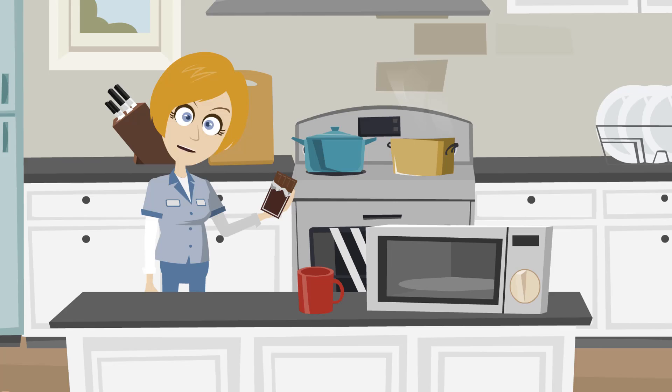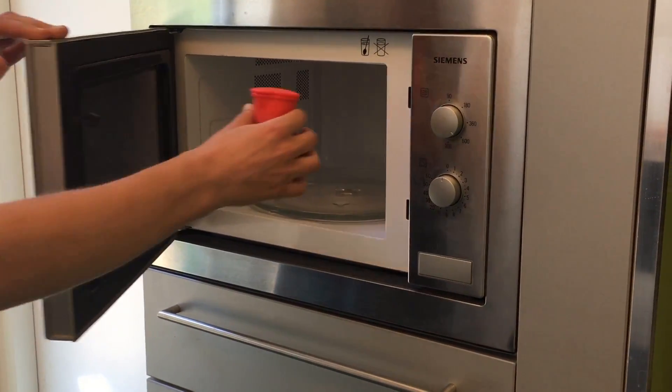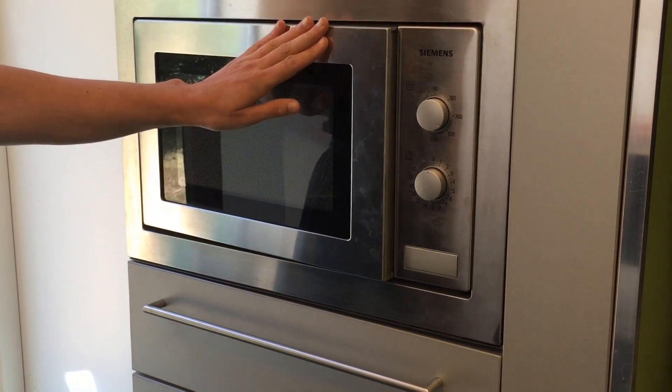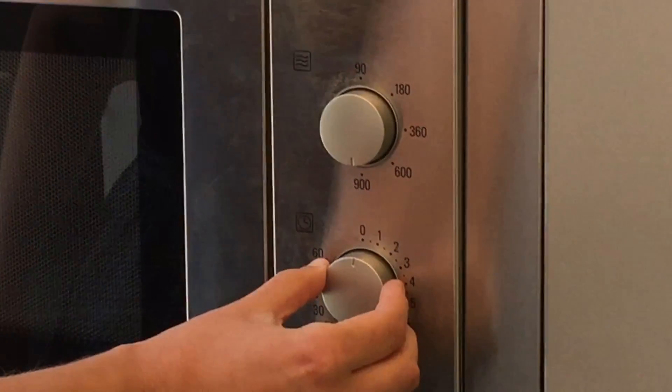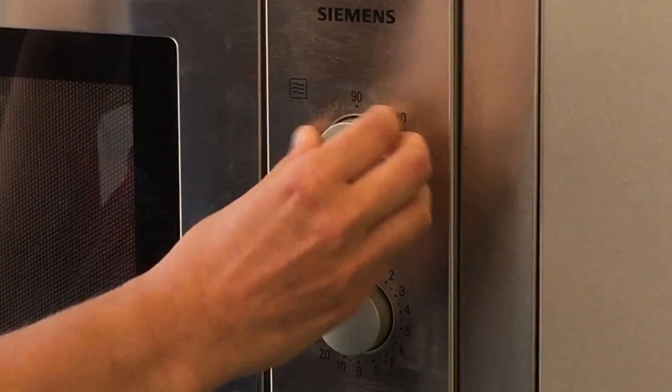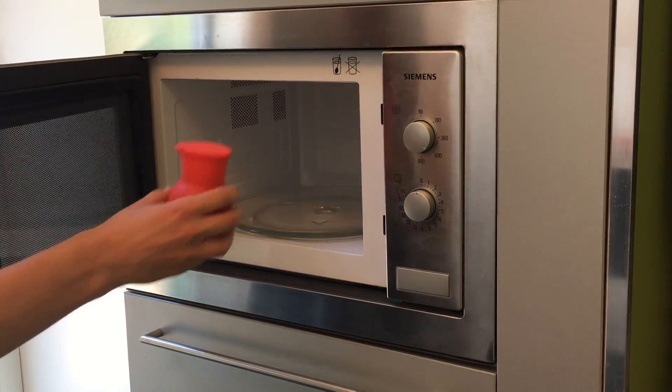First, we'll need to melt the chocolate. Here, we have used a silicone cup to melt the chocolate in a microwave oven, but be careful, it's possible to burn chocolate, so we're using short bursts in the microwave, checking between each burst to see if the chocolate has melted.